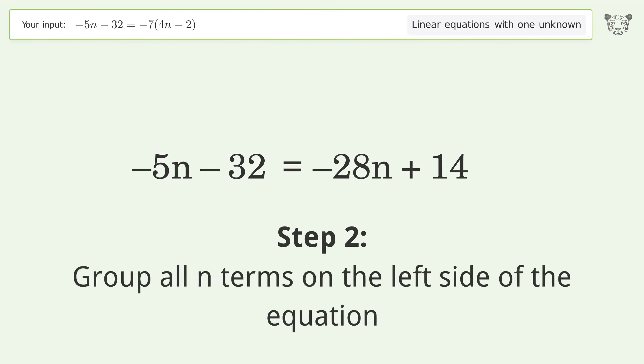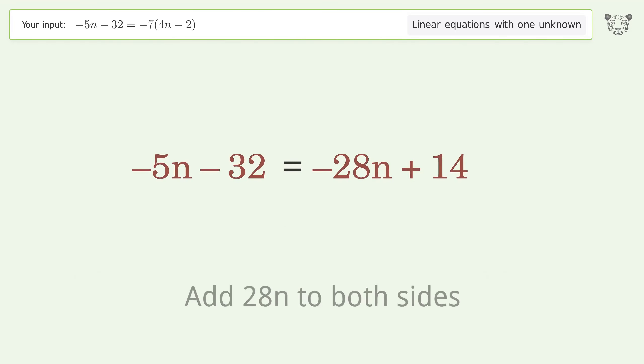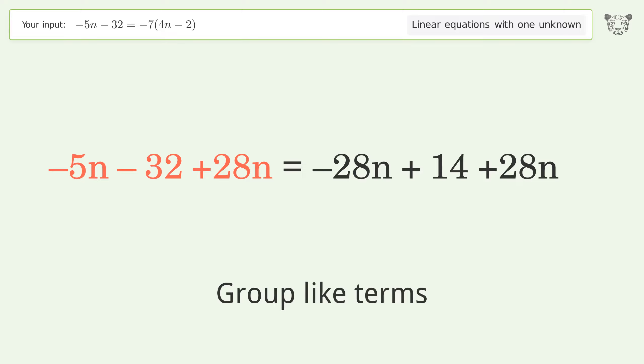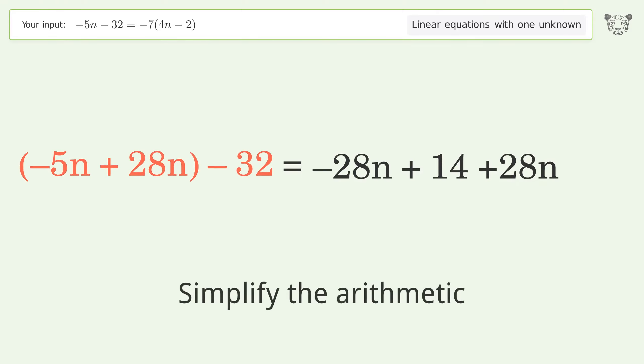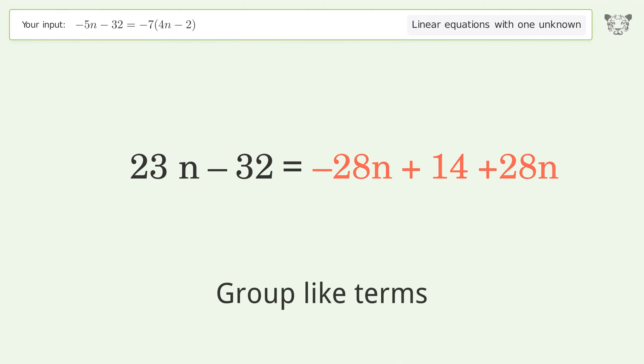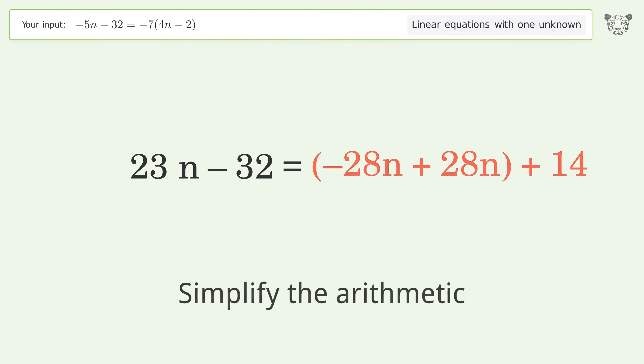Group all n terms on the left side of the equation by adding 28n to both sides. Group like terms and simplify the arithmetic.